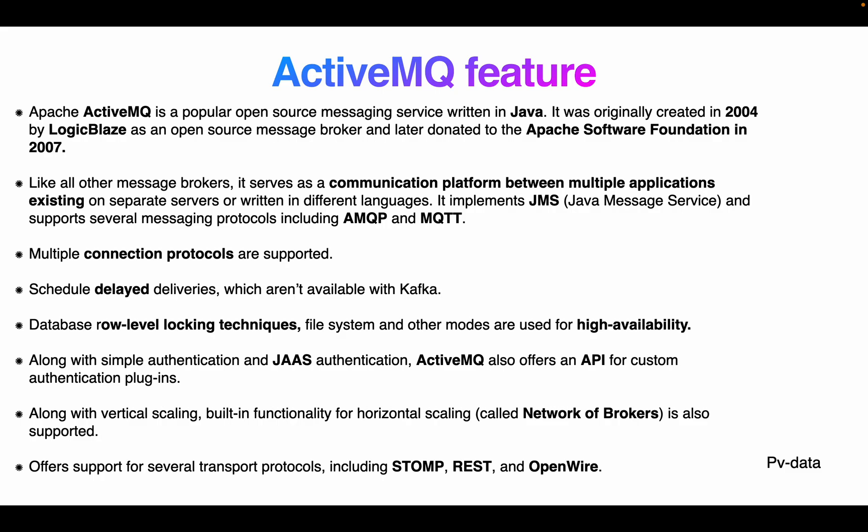ActiveMQ implements JMS (Java Message Service) and supports several messaging protocols including AMQP and MQTT. Scheduled delayed delivery, which is not available with Kafka, is also supported. Database low-level locking techniques, file system, and other modes are used for high availability, along with simple and JAAS authentication. It also offers API custom authentication plugins, vertical scaling, and horizontal scaling called network broker, along with REST API and OpenWire protocol support.